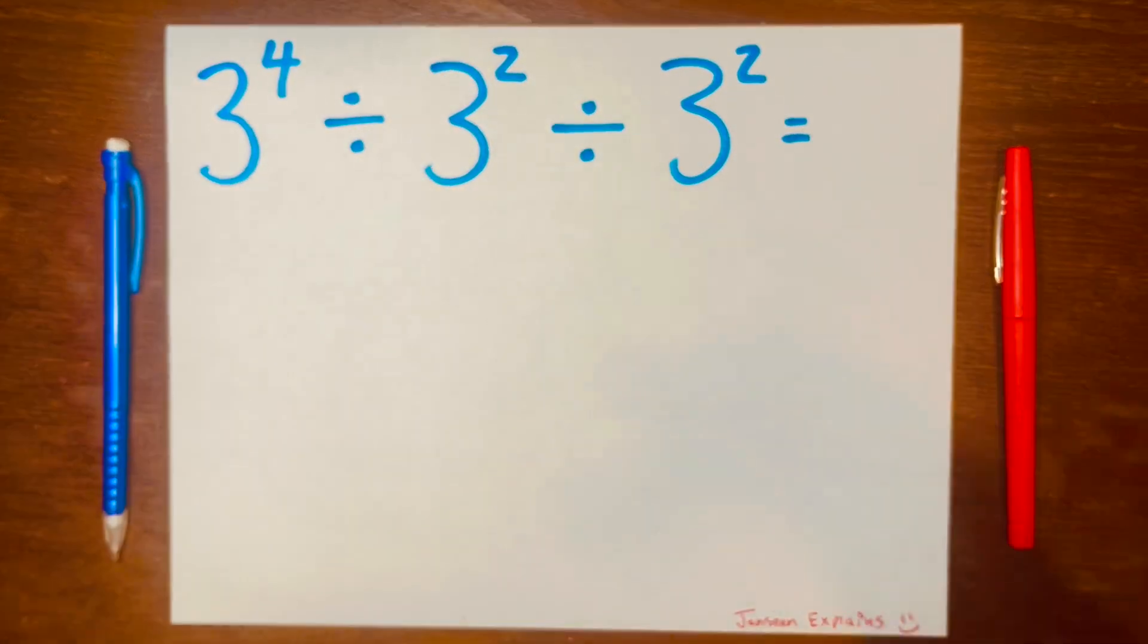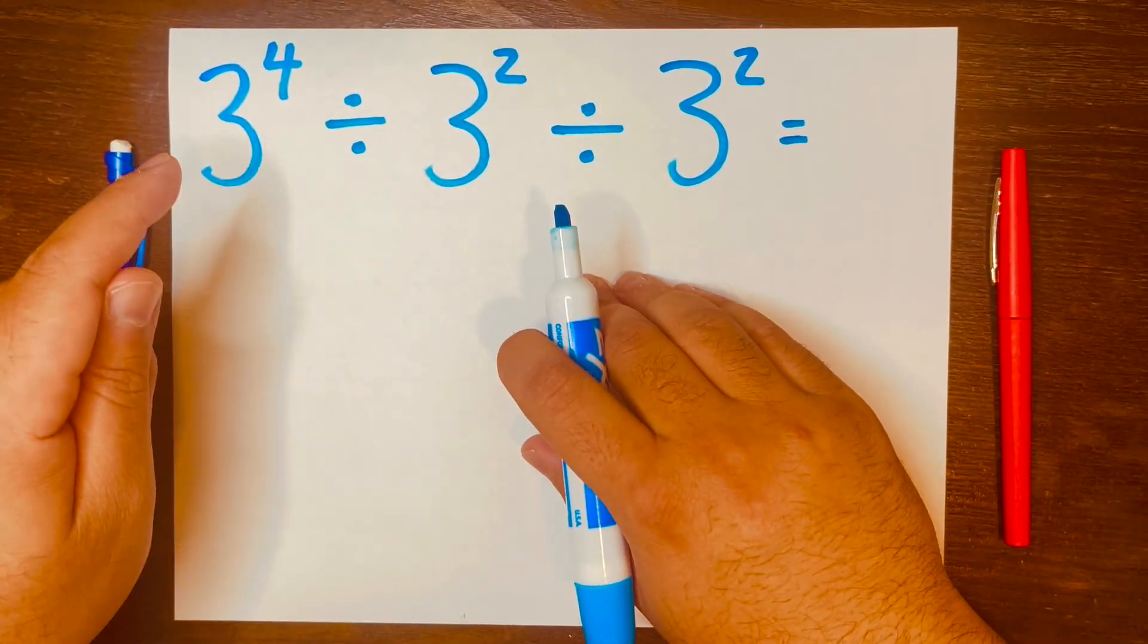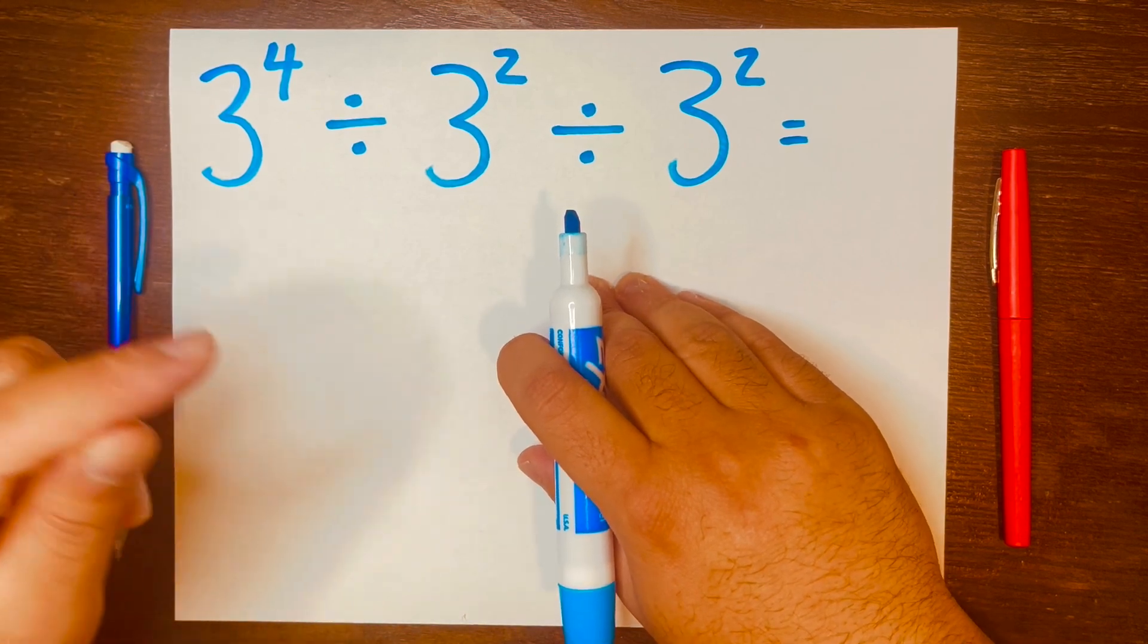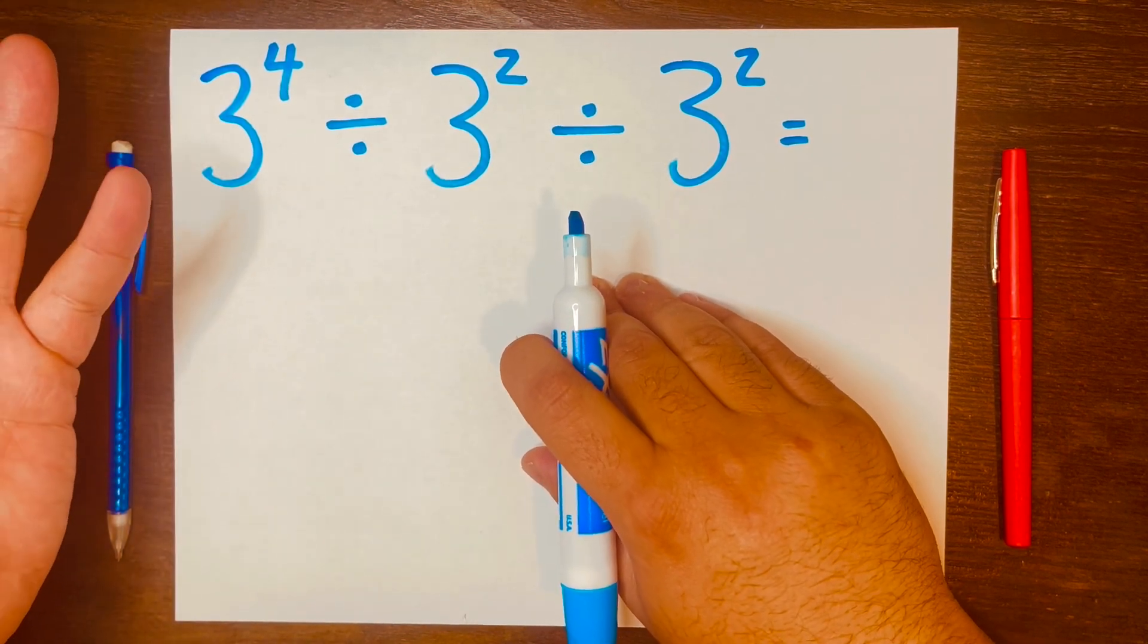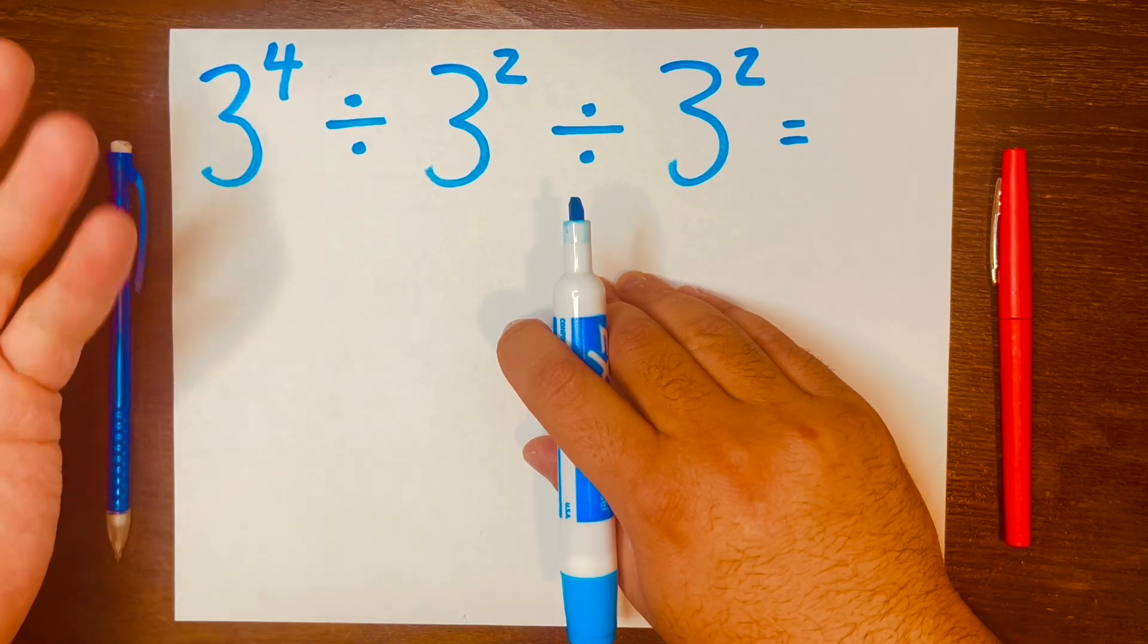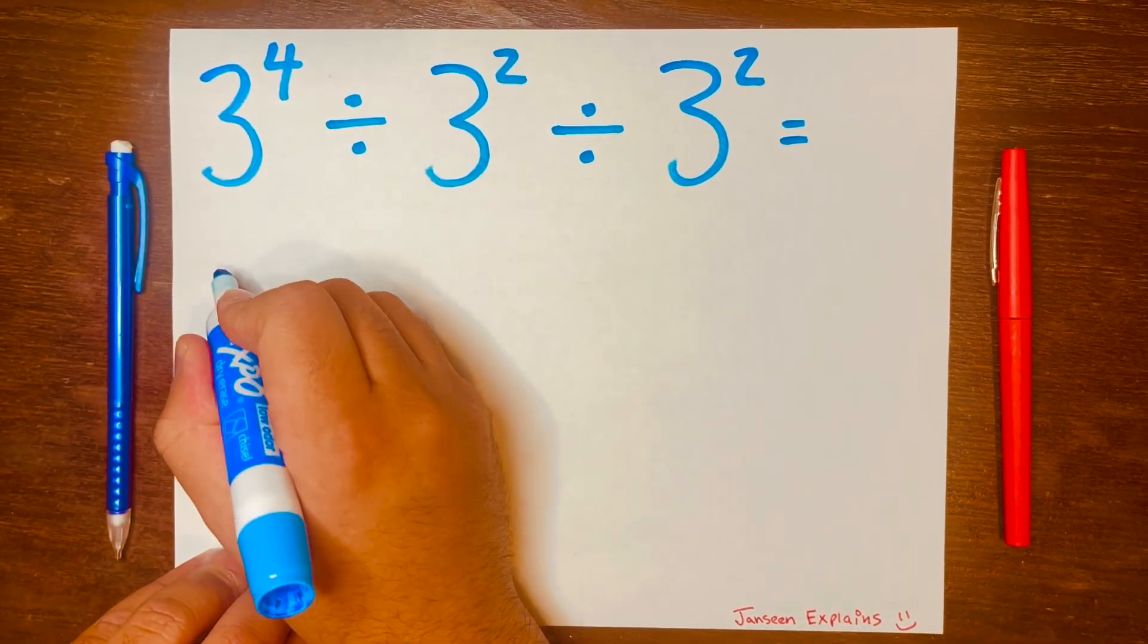So three times three equals nine, nine times three is 27, and 27 times three is 81. So I'll write 81 here, 81, and then write the division symbol there.